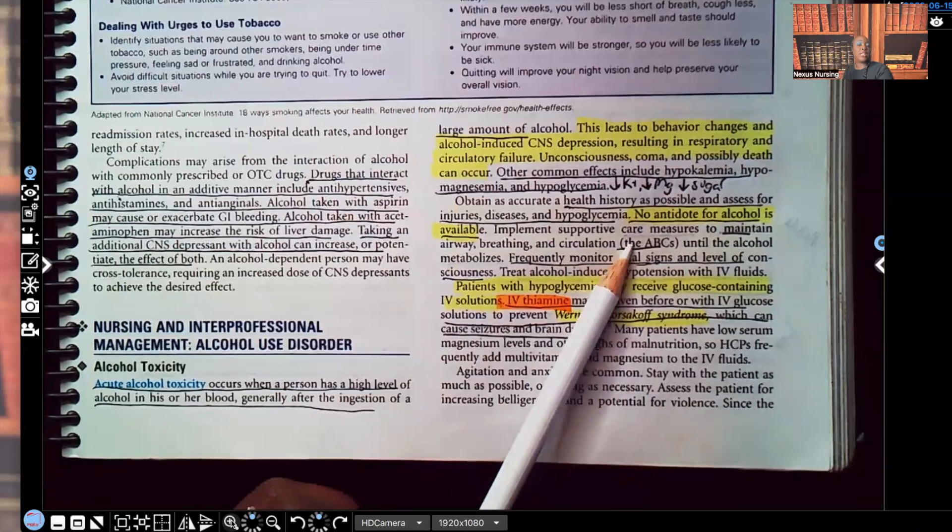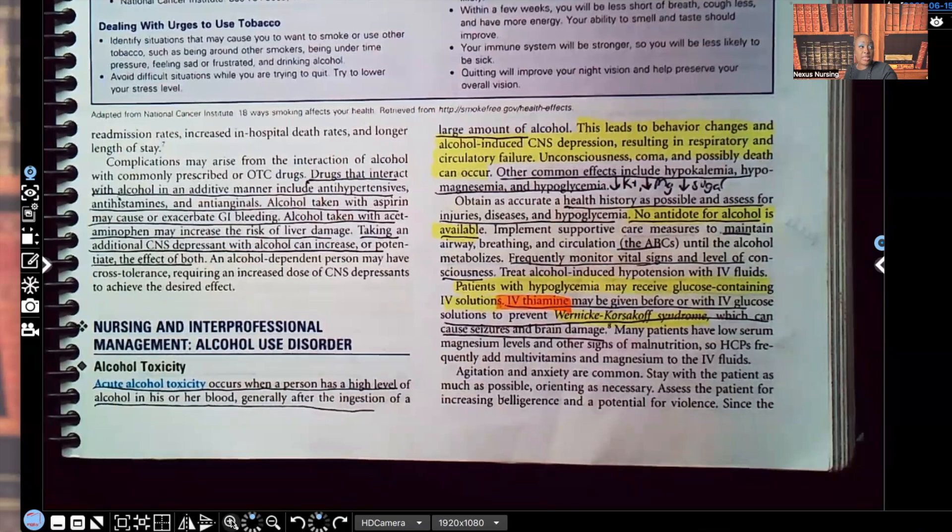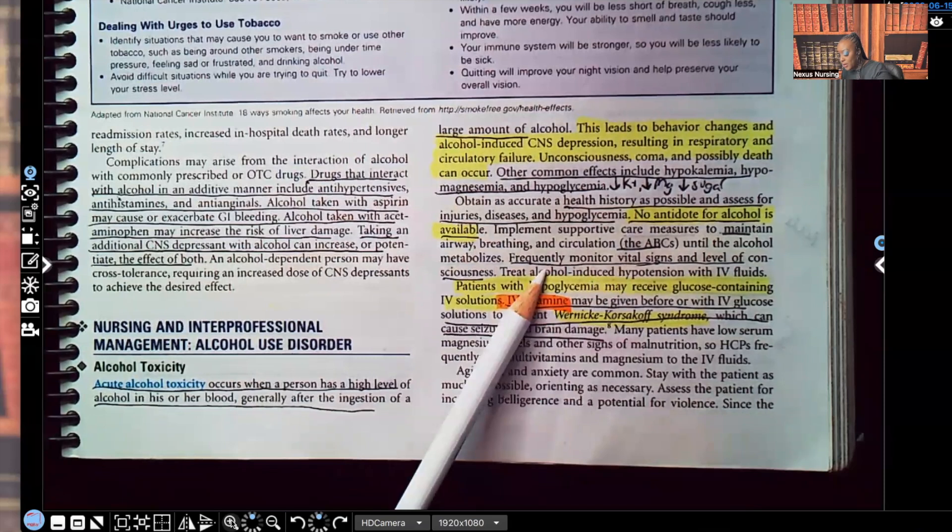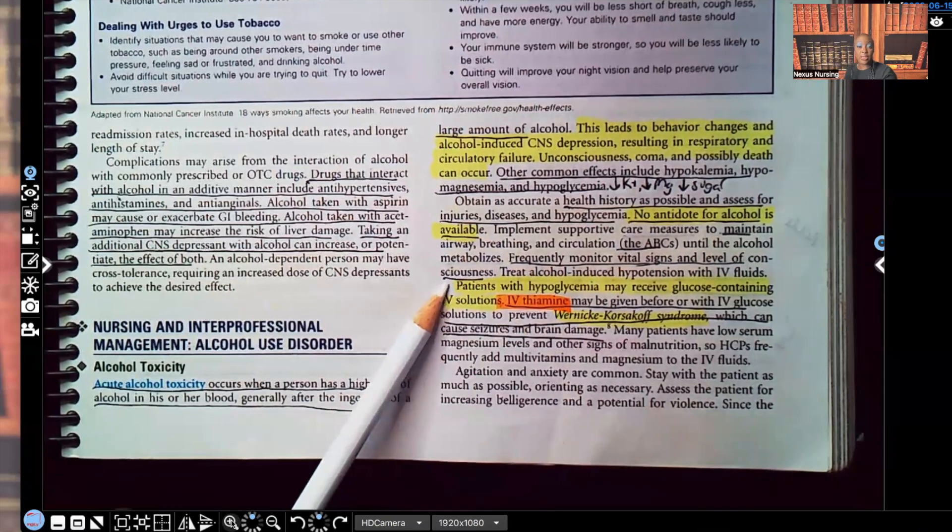Priorities, nursing priorities. You need to maintain airway breathing circulation because let me tell you something, if there's not a patent airway for that patient to breathe, nothing else matters. That patient's dead, right? So you have to maintain the ABCs. You're going to do frequent vital signs. You're going to be checking their level of consciousness because remember that patient can go into a coma on you. They can become unconscious. And if they become unconscious, they can aspirate. We can have a whole other set of issues that's going on.